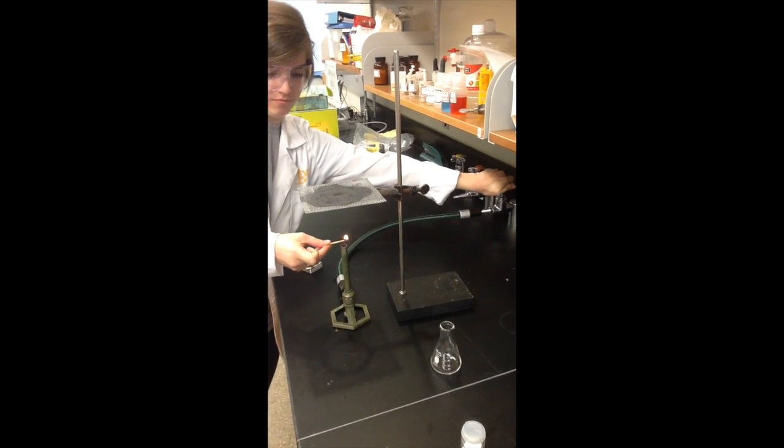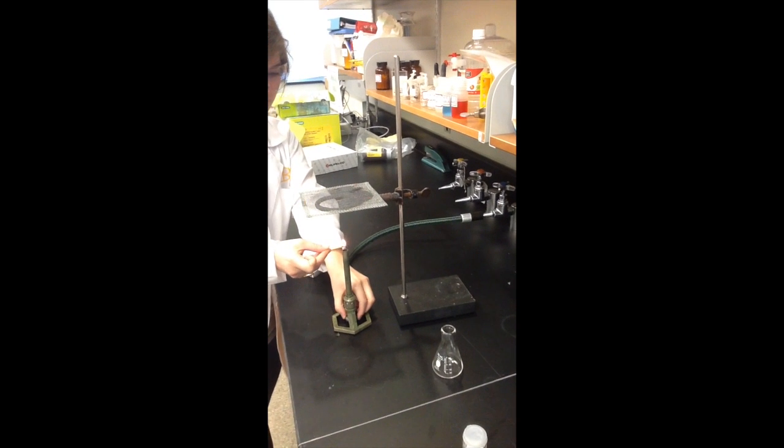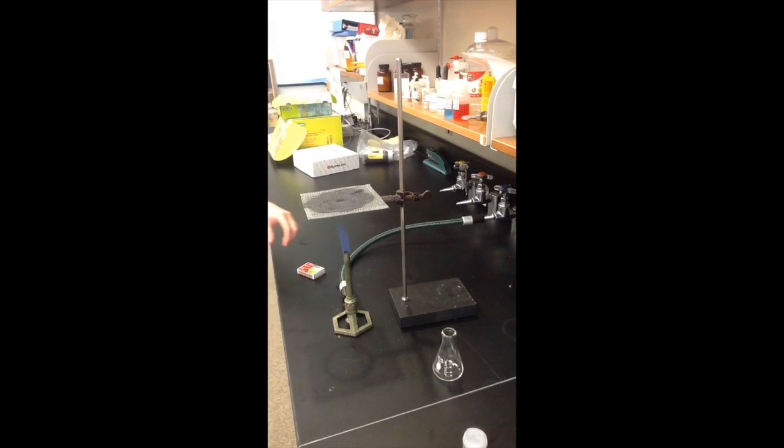Light your Bunsen burner and heat your flask for five minutes. Once you have heated your flask, allow for it to cool and then determine the mass.